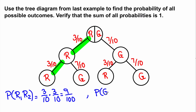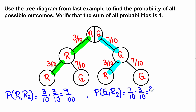Now if I want to find the probability that the first ball is green but the second ball is red, we have to follow that path — first ball is green and the second ball is red. So for that we multiply 7 over 10 times 3 over 10, which equals 21 over 100. By symmetry, the probability that we get red first and green second will also be equal to 21 over 100.